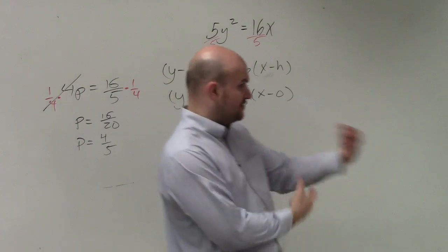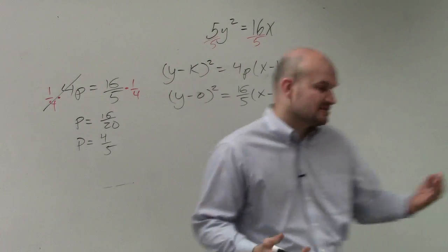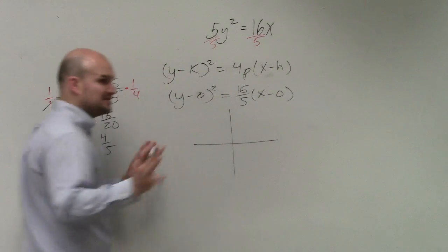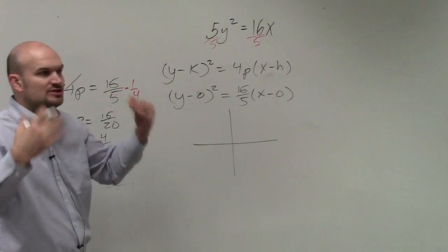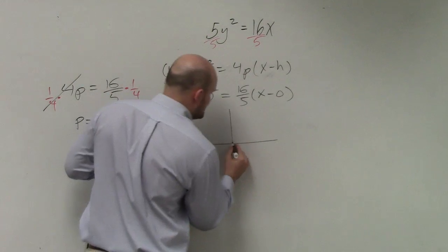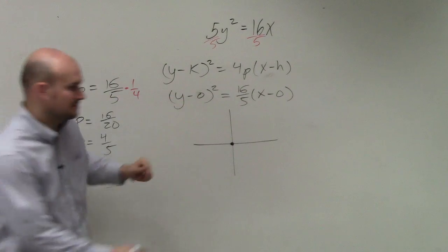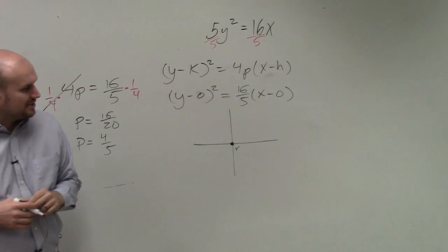Now, to identify the vertex, the focus, directrix, and so forth, the best thing I like to do is just plot the information. It just helps you visualize what this problem is doing. So there's our center. We know the center's at 0, 0. I'm sorry, the vertex. Vertex is at 0, 0.